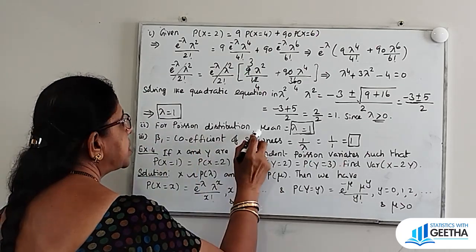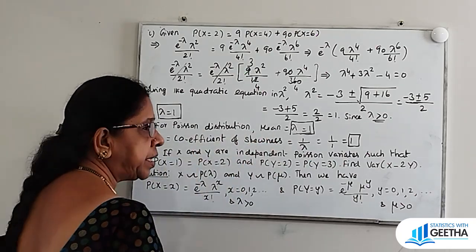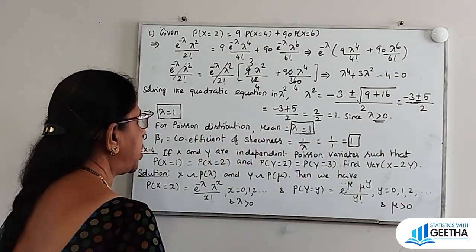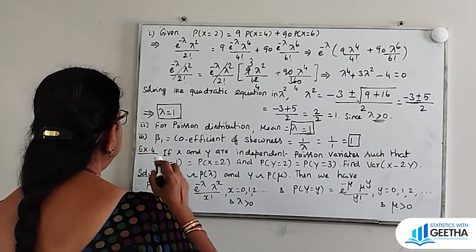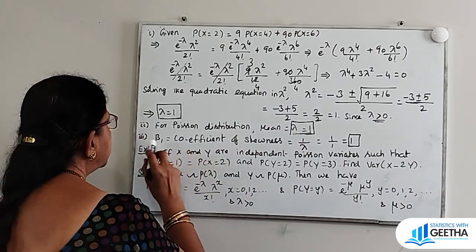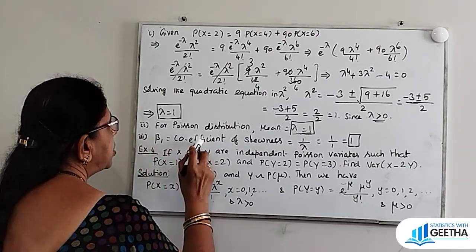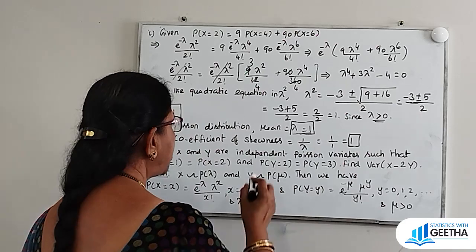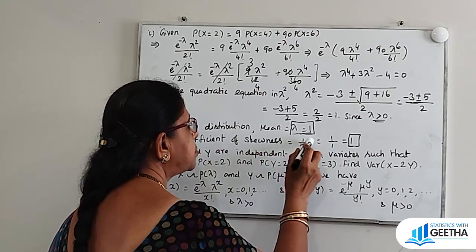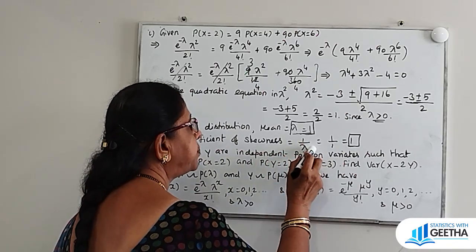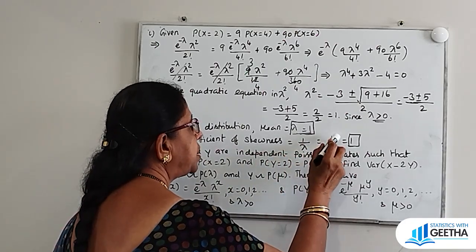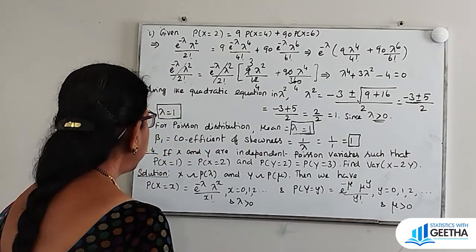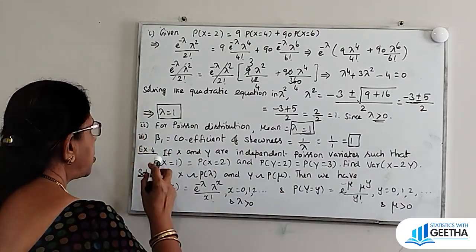For Poisson distribution, mean = lambda, so mean = 1. For the coefficient of skewness, beta 1 = 1/lambda = 1/1 = 1. So the answers are lambda = 1, mean = 1, and beta 1 = 1.